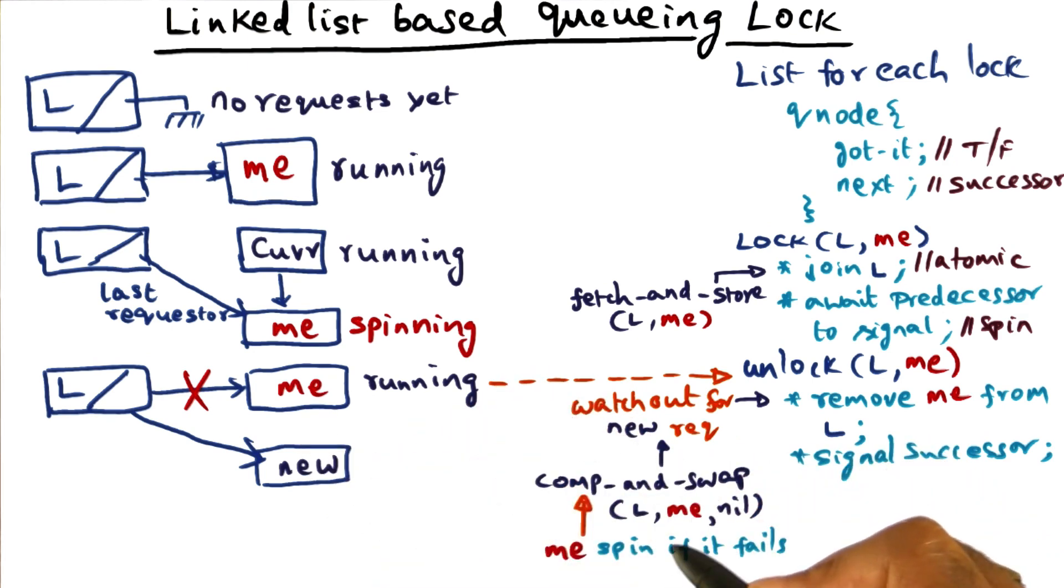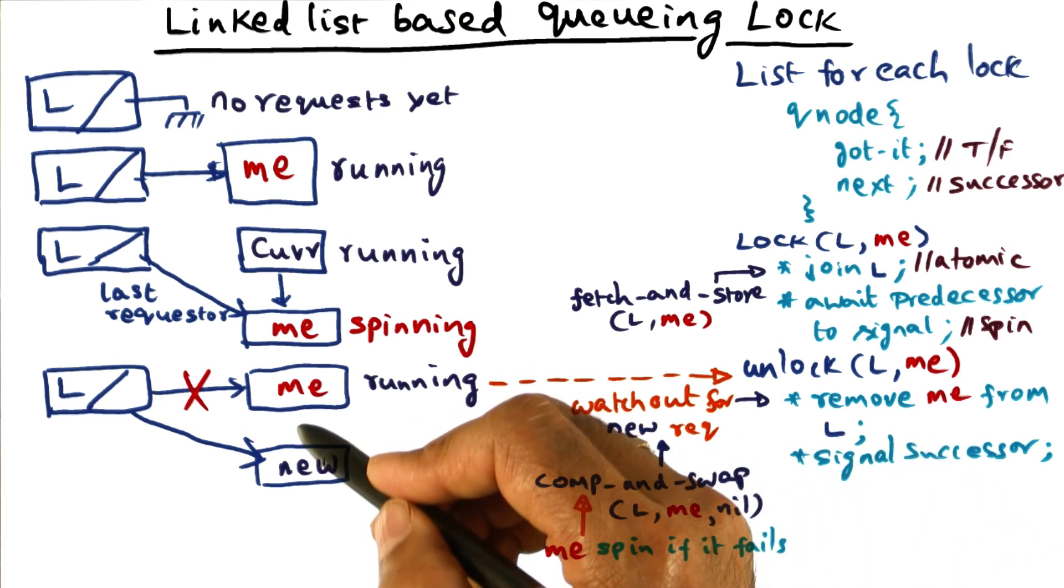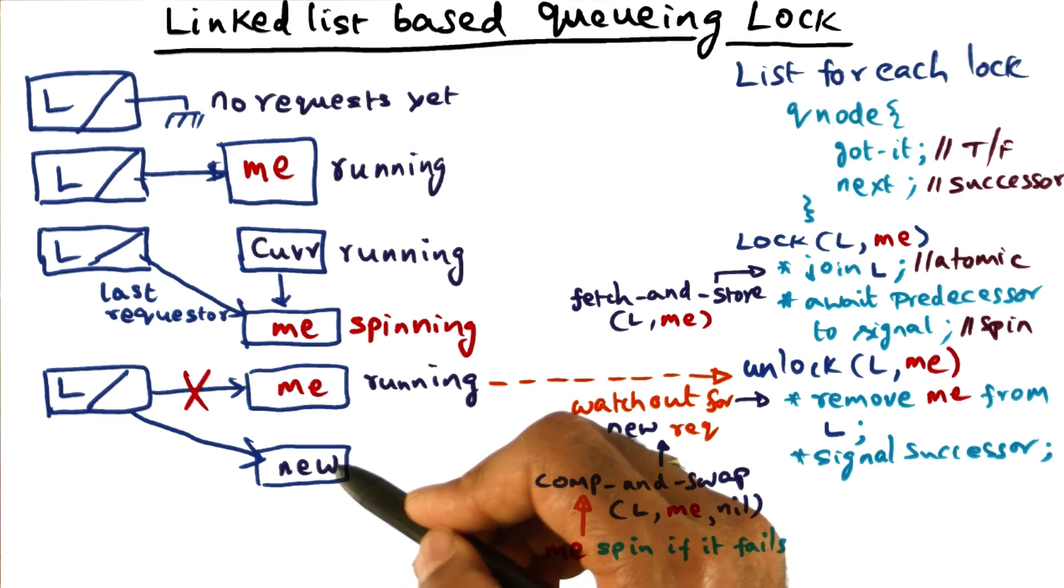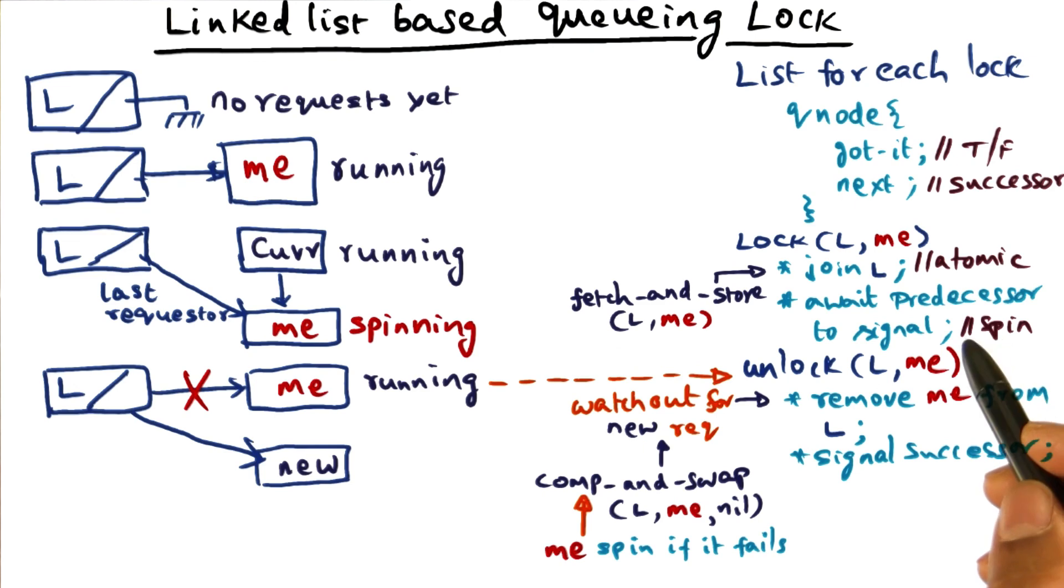So eventually he'll complete that operation. So my spinning is on this becoming not nil, and it'll become not nil because of this new guy completing what he needs to do as part of this lock operation.